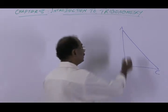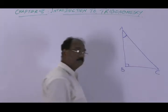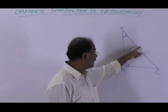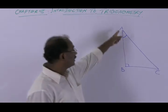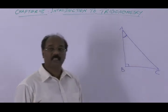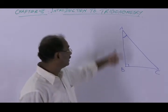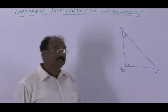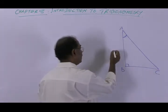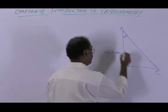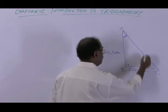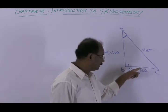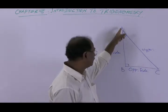Now consider this acute angle A. With respect to angle A, we can name these sides in a specific way. The longest side is the hypotenuse. The side AB, which is next to angle A, is known as the adjacent side of this angle. The side BC is known as the opposite side of this angle. If we consider the other acute angle instead, then BC would become the adjacent side and AB the opposite side.